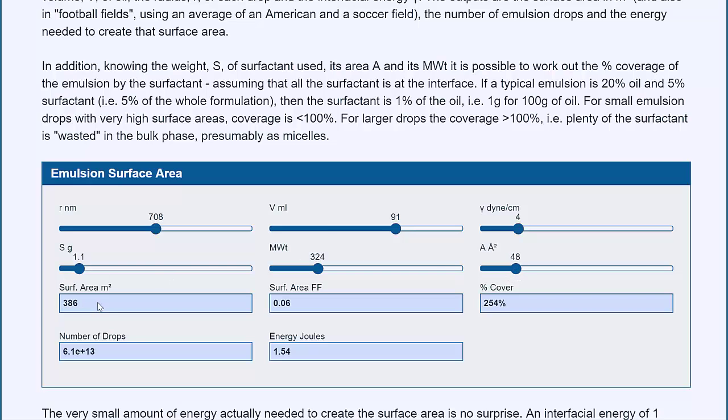Well, the surface area of all those drops is 386 meters squared, and that's about 0.06 of a football field. This 1.1 gram of surfactant covers the drops by 254%. So we've got too much surfactant. There are 6 times 10 to the 13 drops, and the energy needed to create these drops, just this surface area, is 1.5 joules, i.e. almost nothing.